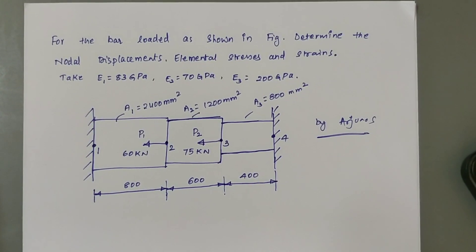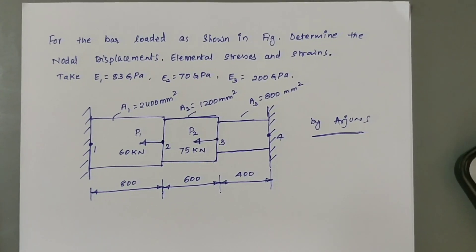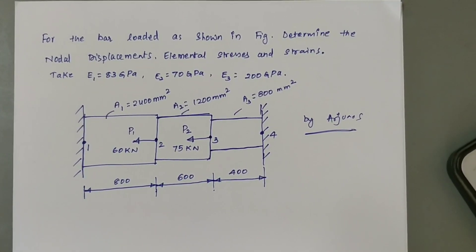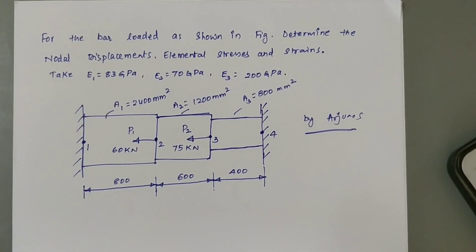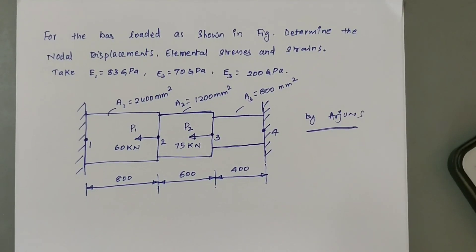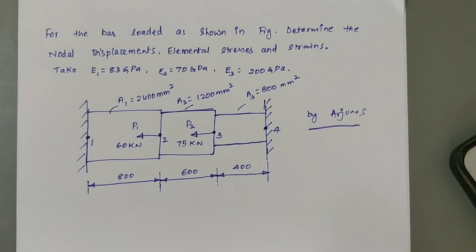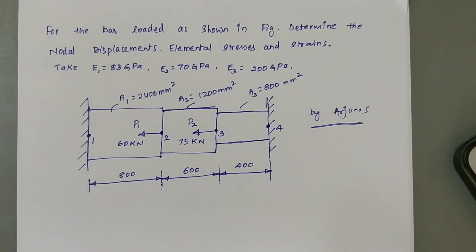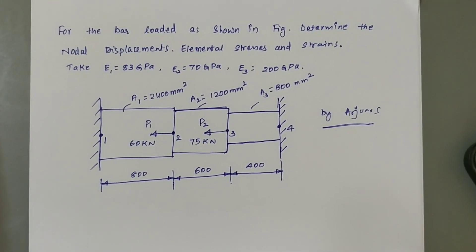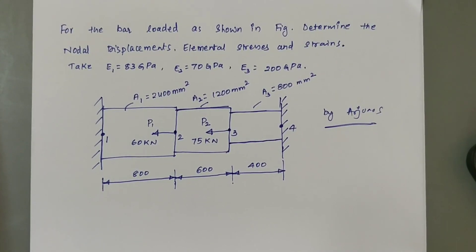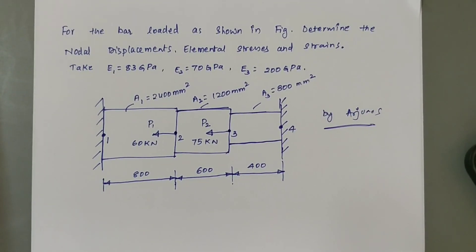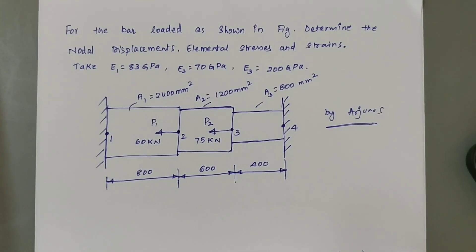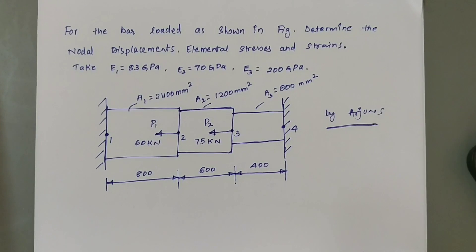In this session we will see how to solve the problems on stepped bars using ANSYS. The given problem is: for the bar loaded as shown in figure, determine the nodal displacements, elemental stresses and strains. The given Young's modulus is 83 GPa for element 1, 70 GPa for element 2, and 200 GPa for element 3. Cross-sectional areas are 2400 mm², 1200 mm², and 800 mm² respectively, with span lengths of 800, 600, and 400 mm for elements 1, 2, and 3.